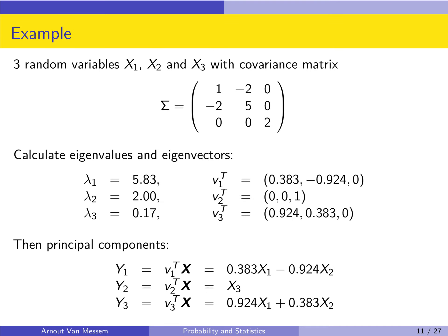Let's illustrate the principle through a fictive example. Suppose we have three random variables x1, x2, and x3, with covariance matrix sigma as given on the slide. For sigma, we can calculate eigenvalues and eigenvectors. The eigenvalues are 5.83, 2.00, and 0.17 — three eigenvalues, with lambda 1 the largest and lambda 3 the smallest. For each eigenvalue, we calculate the eigenvectors v1, v2, and v3.